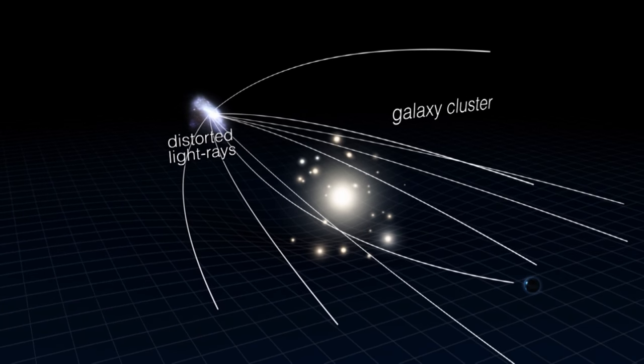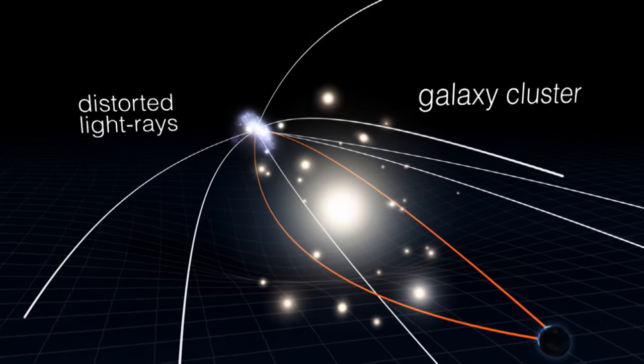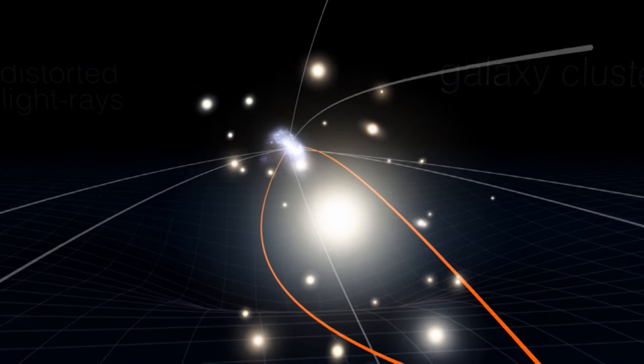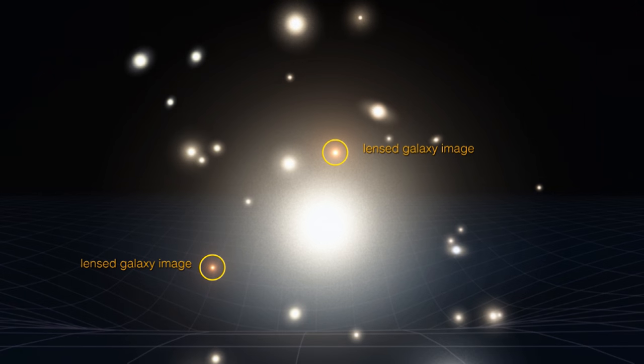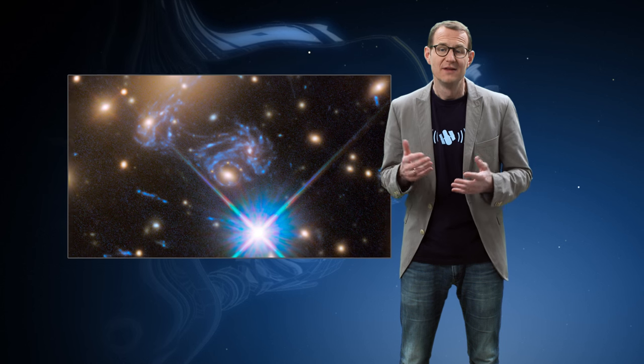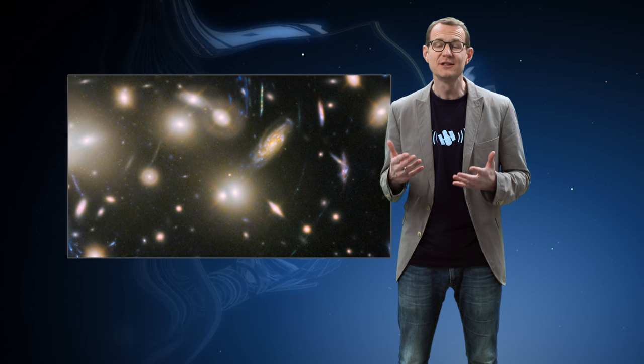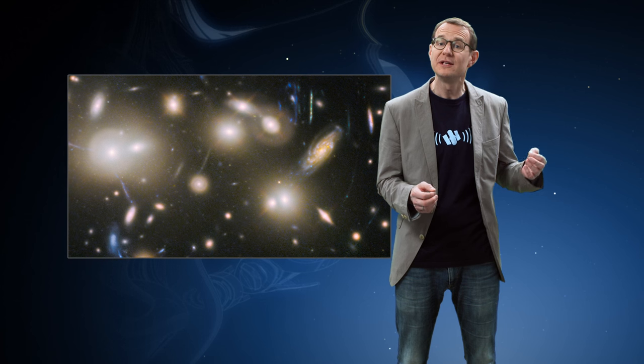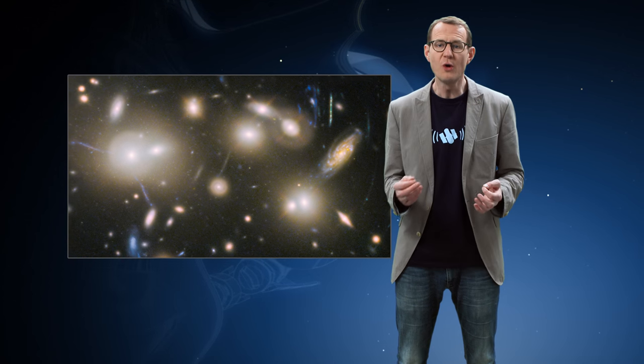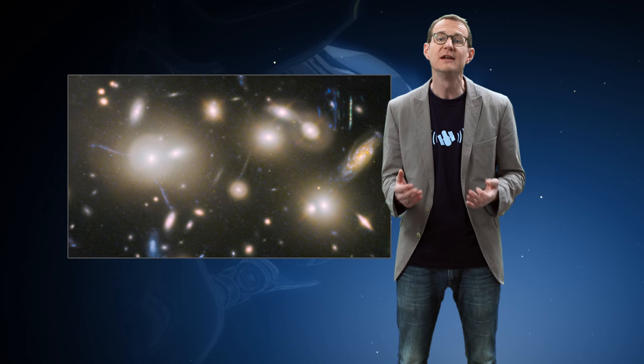The enormous amount of mass in a galaxy cluster means that it bends the space around it and acts like a gigantic magnifying glass. This process is known as gravitational lensing and it allows astronomers to study objects behind the cluster in the very distant Universe that would normally be too faint to see, even for Hubble.